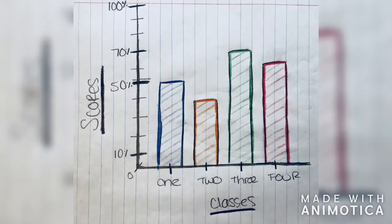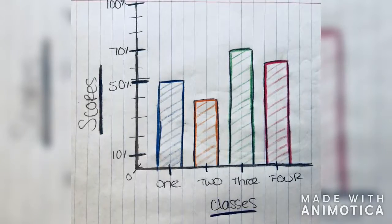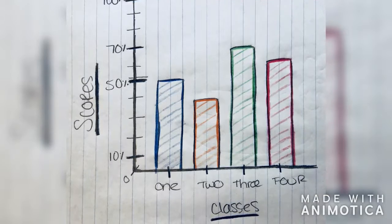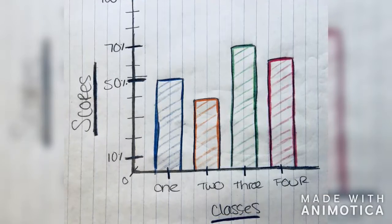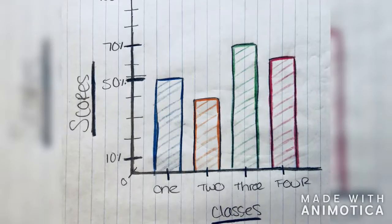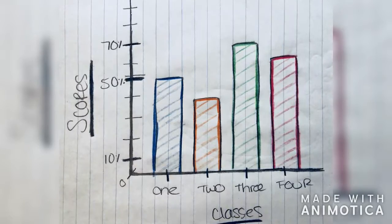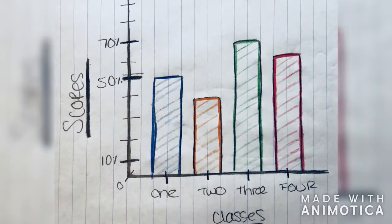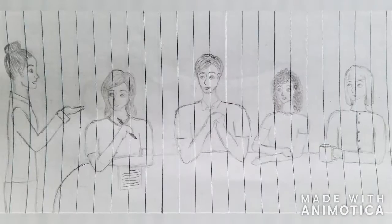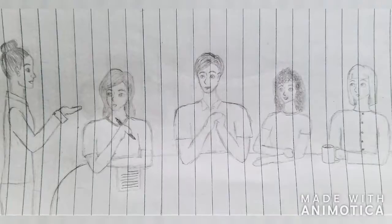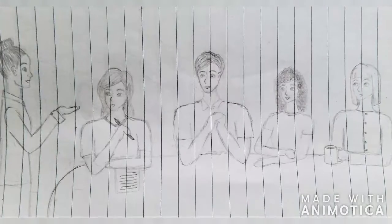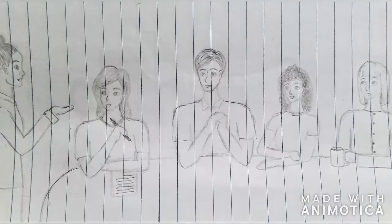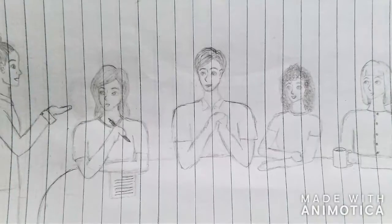We start with the principal of our school who says that she's called a meeting because she's noticed some of the classes are performing worse than others. As you can see by the graph, we need to evaluate and alter the teaching methods to improve our academic scores. We will assign one teaching method to each class and see how they perform. This is going to help us determine which method is most effective to student learning and reach our goal of high scores.